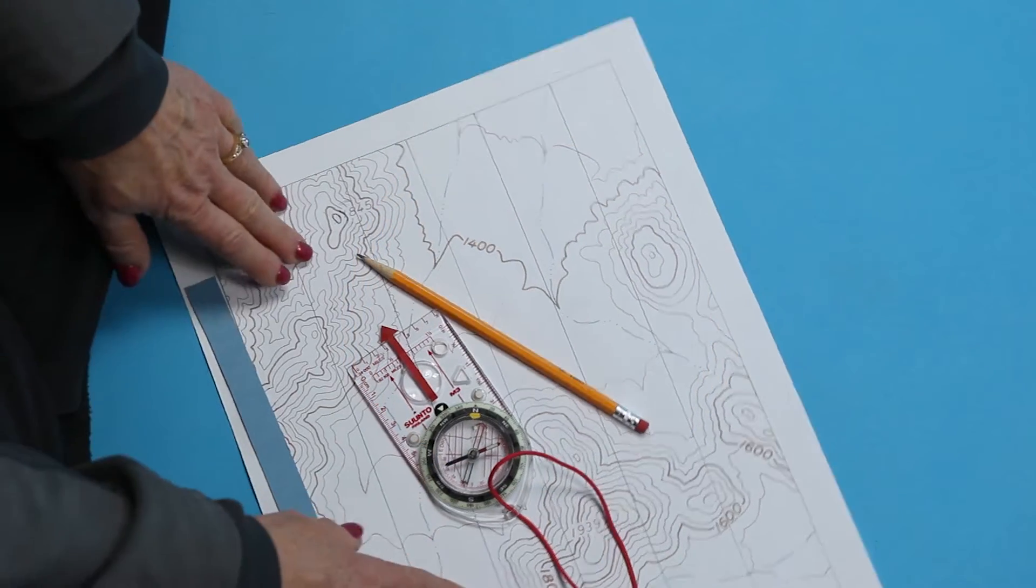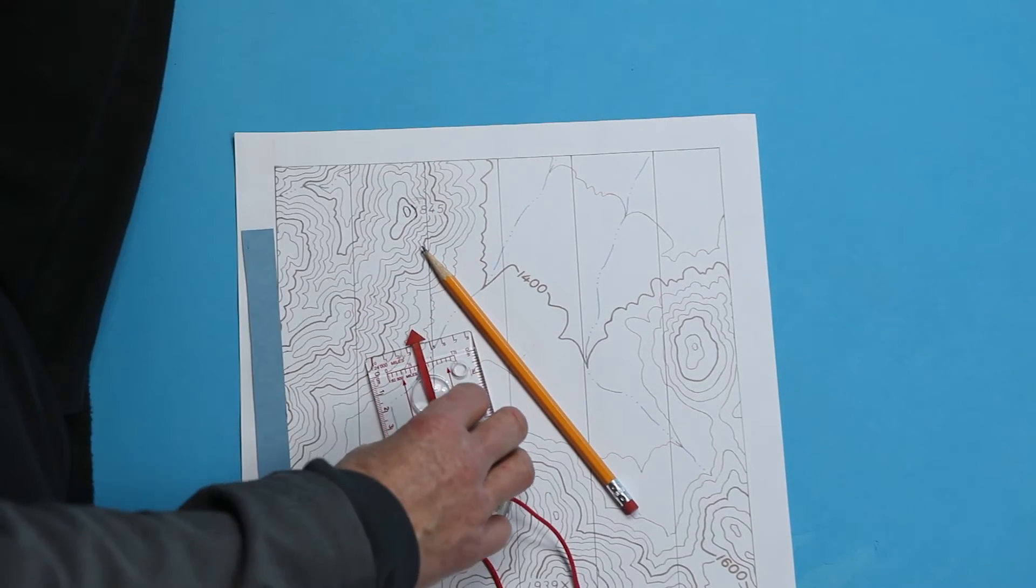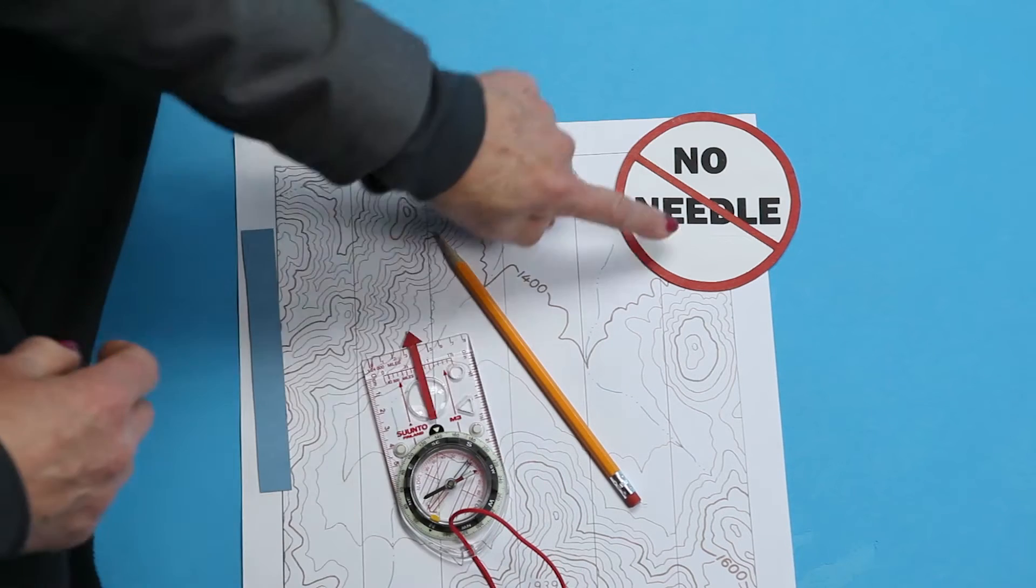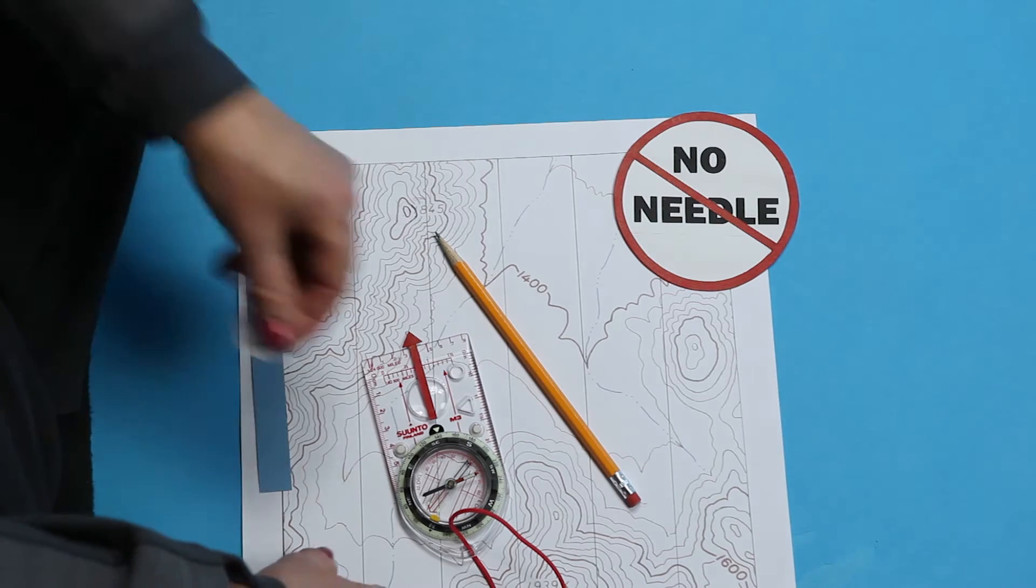The map doesn't need to be oriented. On the map, ignore the needle. There's no magnetism on the map, so you don't use the needle with the map, and in fact, I think I'll just cover it up.